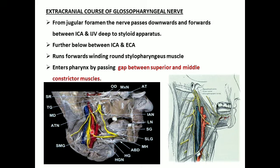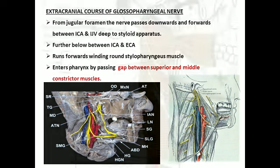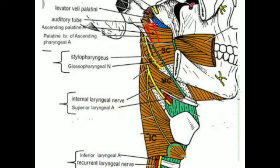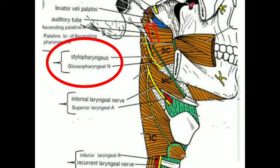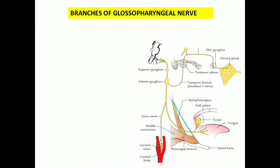Further, this nerve enters the pharyngeal region by passing through the gap between the superior and middle constrictor muscles. Here the nerve accompanies the muscle called the stylopharyngeal muscle. The structures passing through the gap between the superior and middle constrictor muscles are the stylopharyngeal muscle and its nerve — which is the glossopharyngeal nerve.